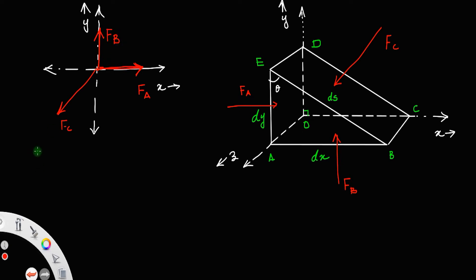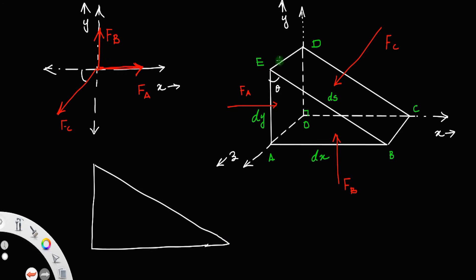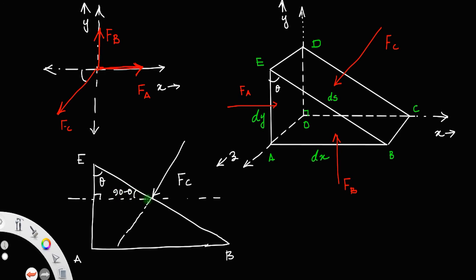Now, we have to resolve this. But first, we must find the angle. Considering triangle EAB, we know this angle equals theta. Drawing a horizontal line, this angle will be 90°, so this angle equals 90° minus theta. Since the whole angle is 90°, this angle will be theta. So this angle equals theta.